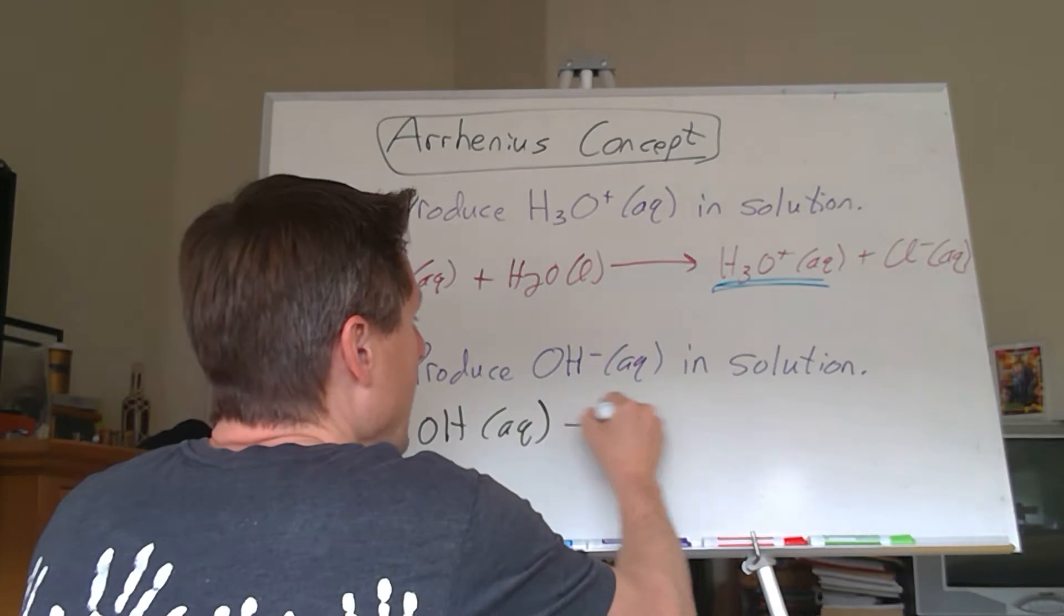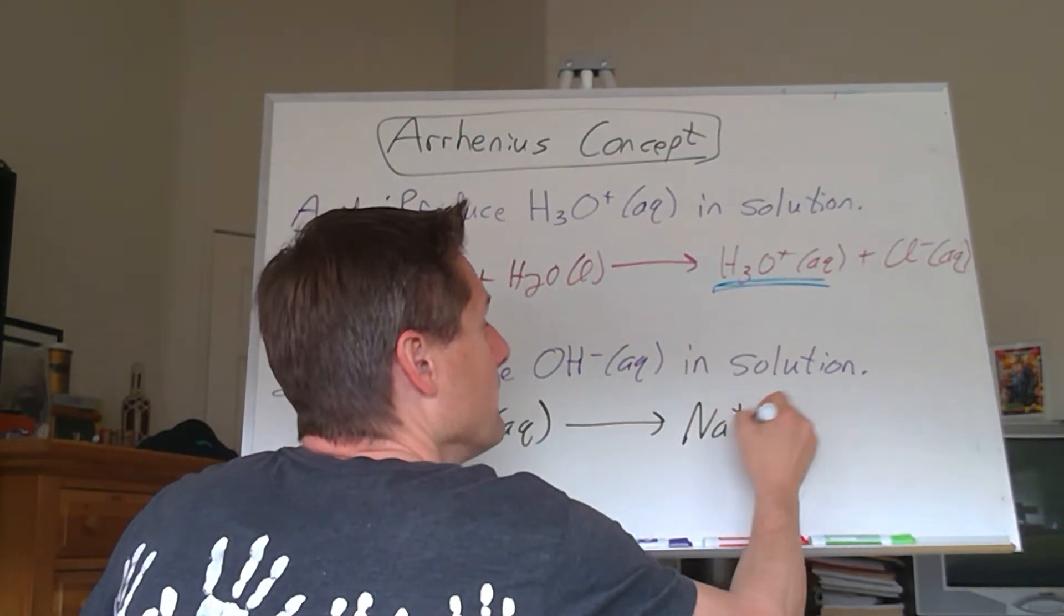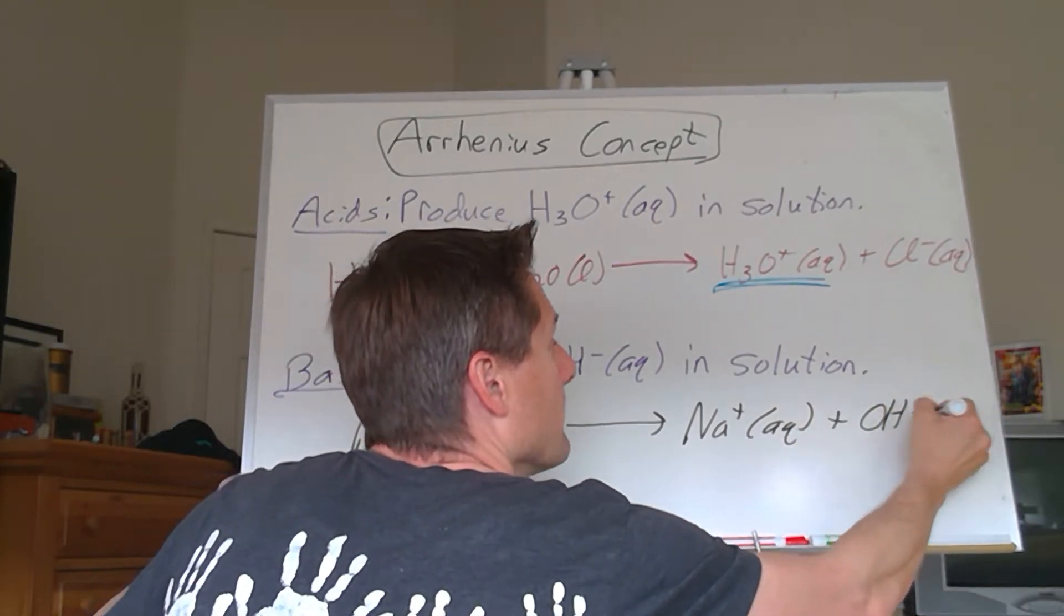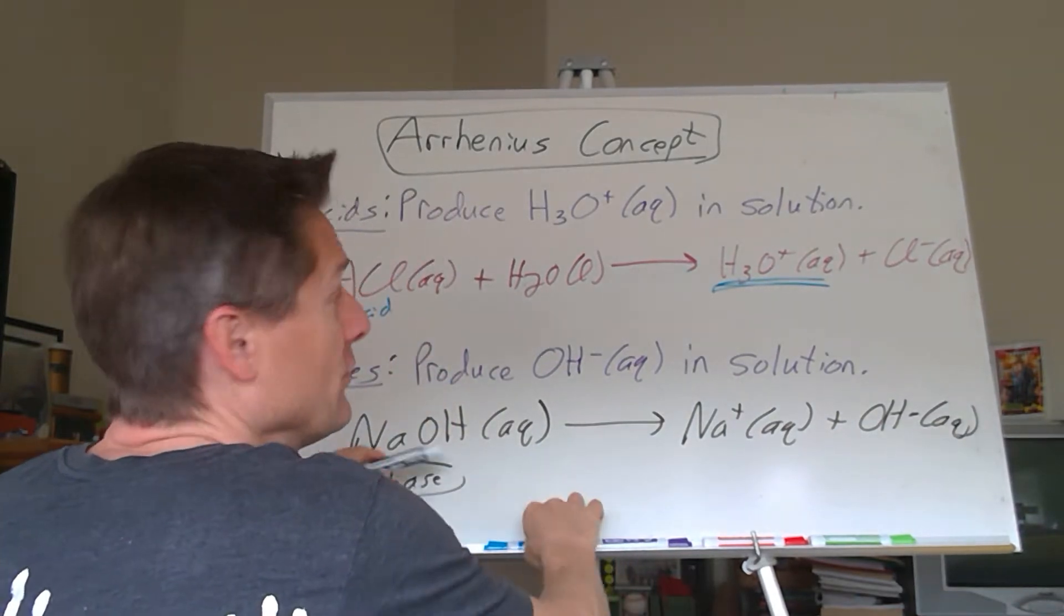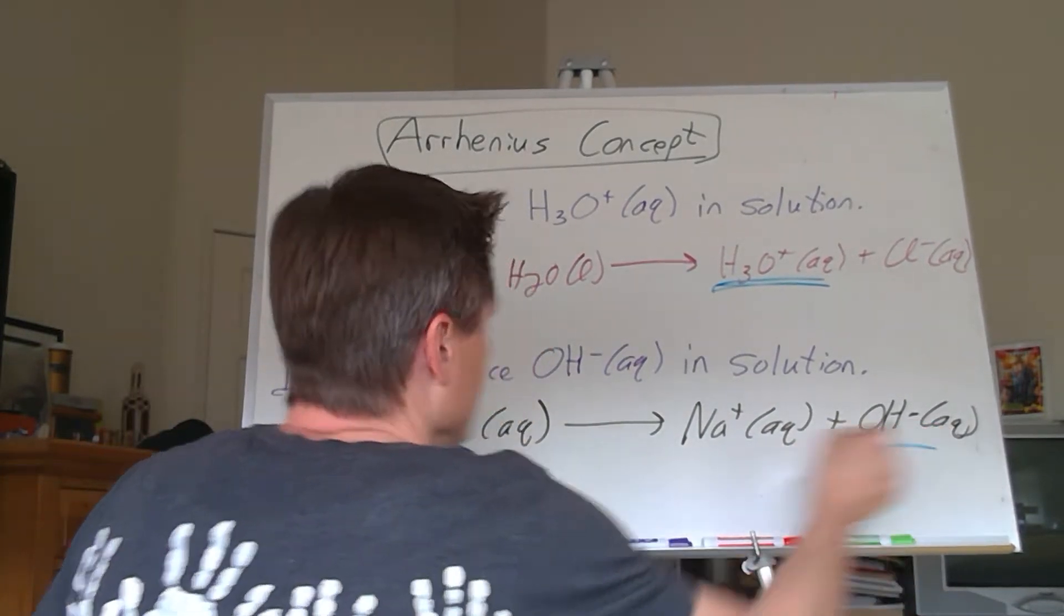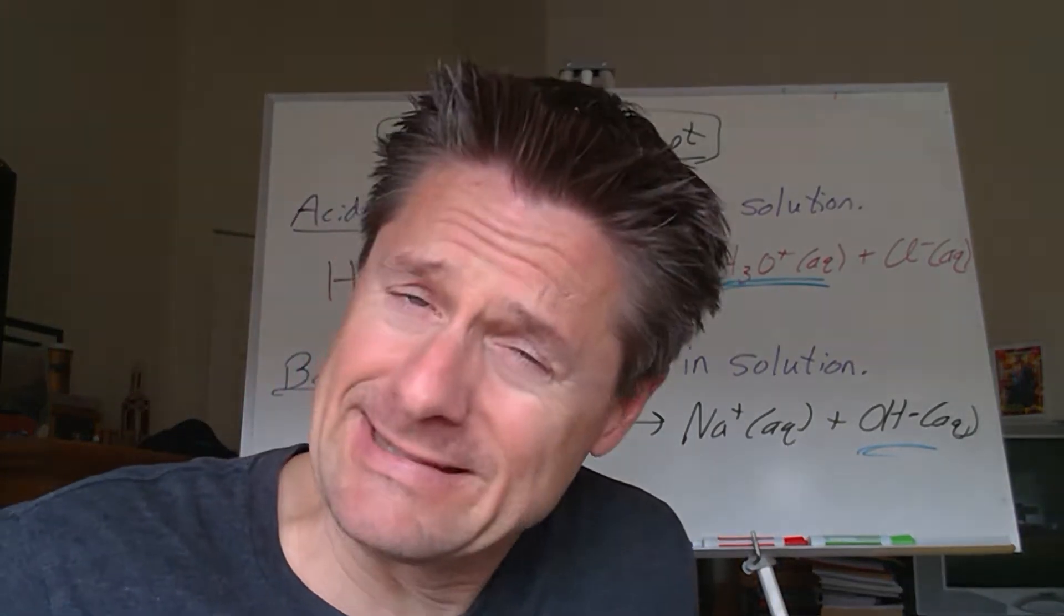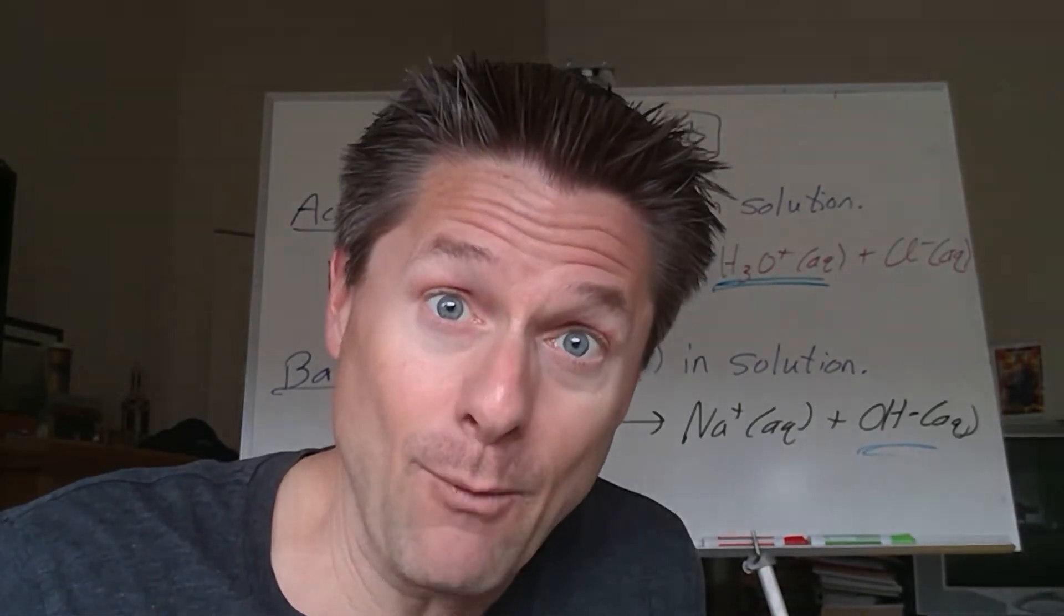But there's some species that don't have OH- in it, but it produces OH- in solution. So this is an ionic compound, so that's not going to react with the water. It's just going to break apart. It's going to dissociate. And it's strong, so that's going to do it to 100%, where we get the sodium ion and the hydroxide ion. So here we've got something producing the hydroxide ion, therefore, that must be a base.